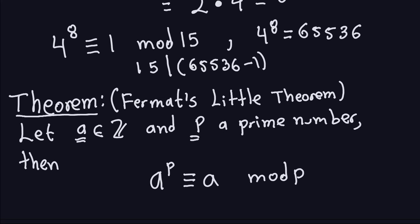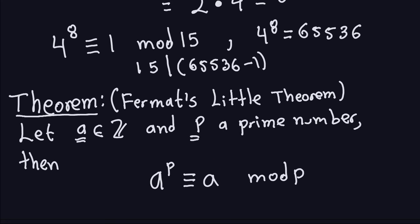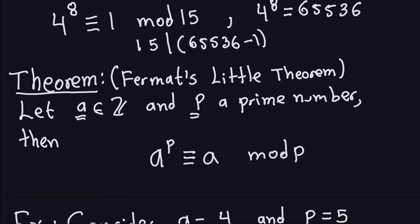Fermat's Little Theorem is similar to Euler's theorem. It says: if I have an integer a and a prime number p, then a and p do not have to be relatively prime — it's any integer a and any prime p. The theorem states that a to the p power is congruent to a modulo p. So if you take a^p and divide it by p, the remainder is the same as when you divide a by p.